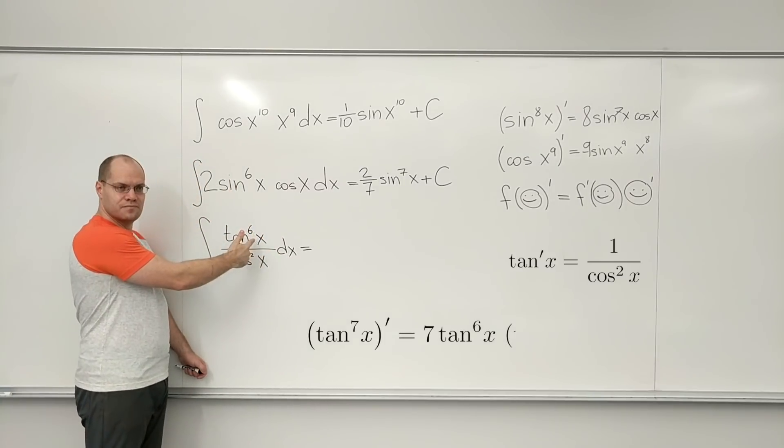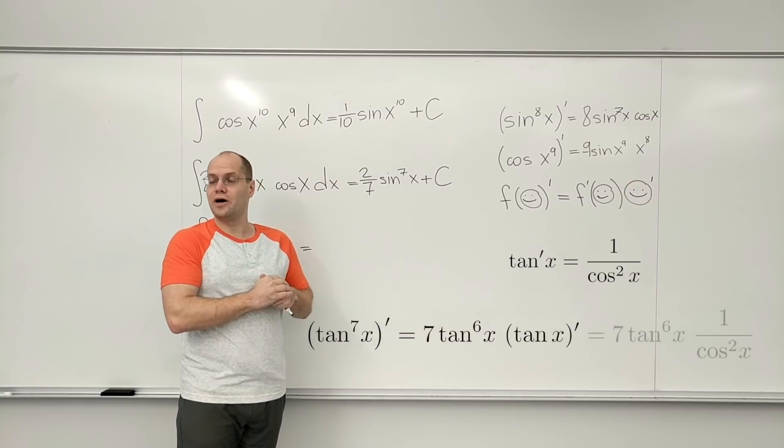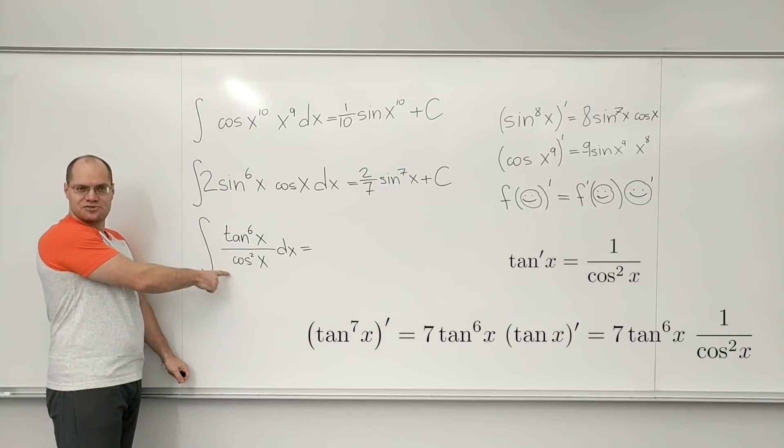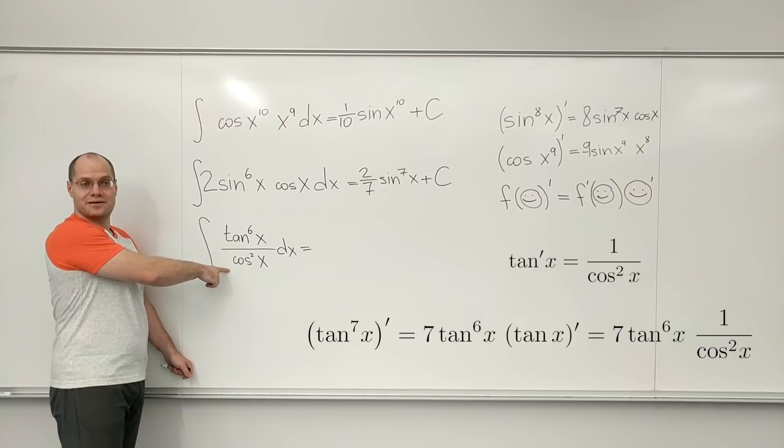Great. But then you have to keep rolling with the chain rule times the derivative of tangent, which is one over cosine squared. And how fortuitous - there it is right there. So it's exactly what I was hoping to see.